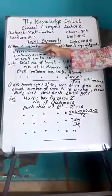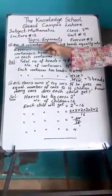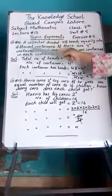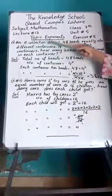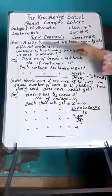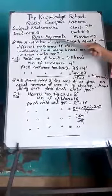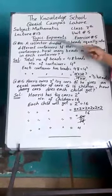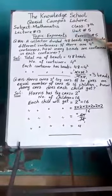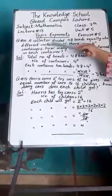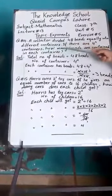Students, we have completed questions 1, 10, and 13. Now today we are starting question number 14. Question number 14 is: a collector divided 48 beads equally into different containers. Means total number of beads are 48 and the collector must have to divide these 48 beads in different containers.